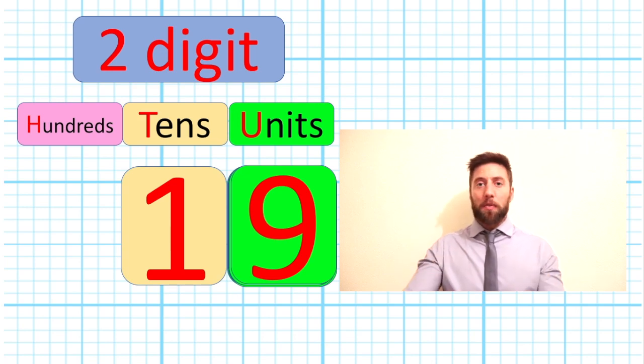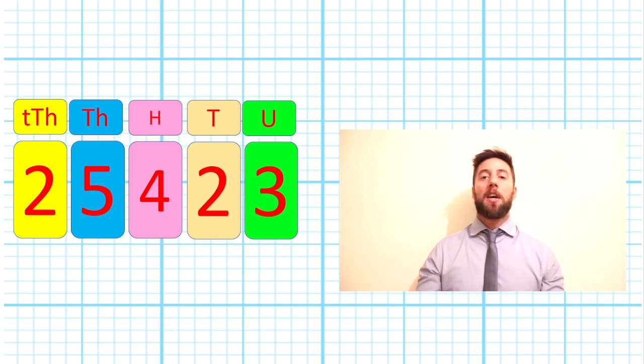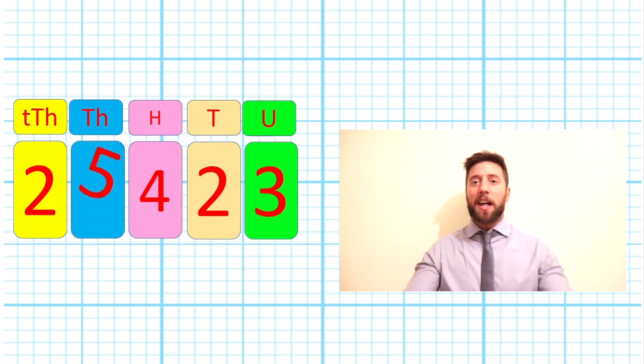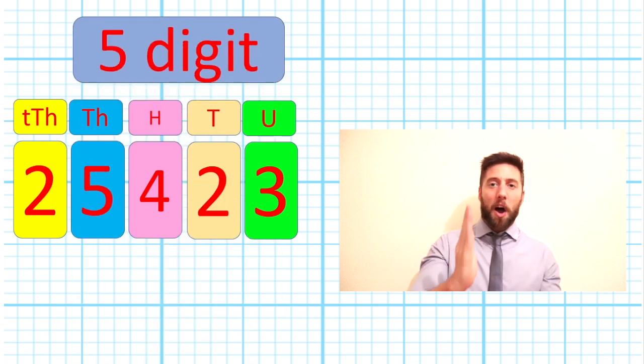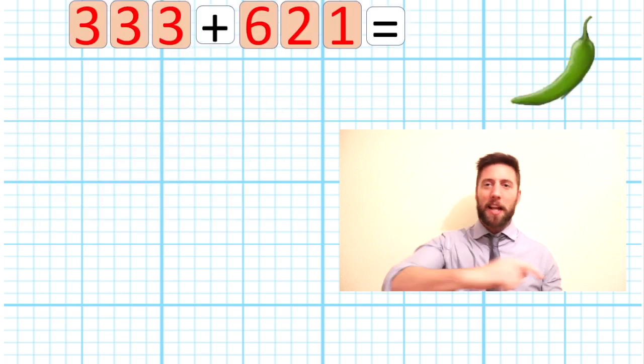The number 19 is double digit - we've got a 1 and a 9, nine in our units, one in our tens. If we look at a great big number like 25,423, that's a five digit number because we've got five digits going along our place value chart.